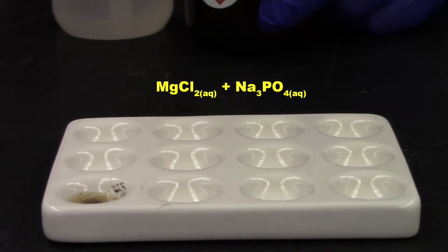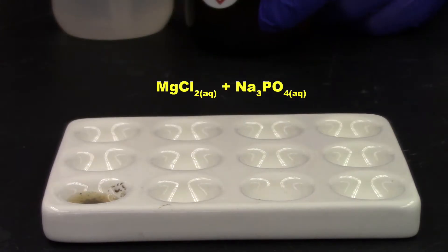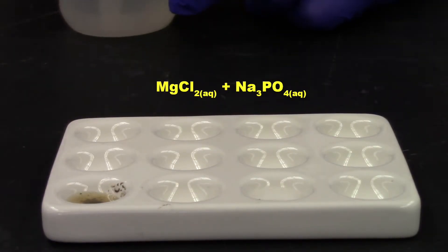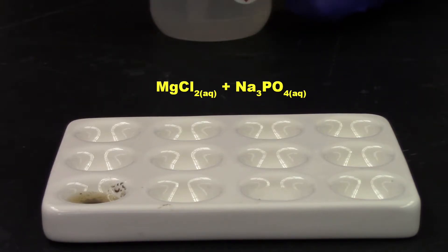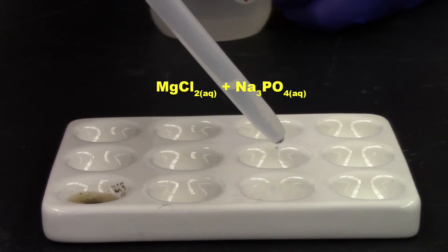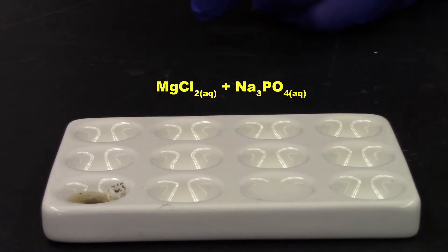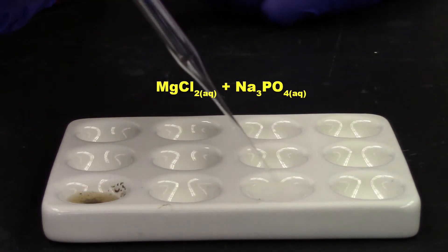So here's the magnesium chloride. Clear, colorless liquid again. Sodium phosphate. Another clear, colorless liquid. All right. Now, so far, it looks like nothing's really happened. But let's take a closer look, shall we?